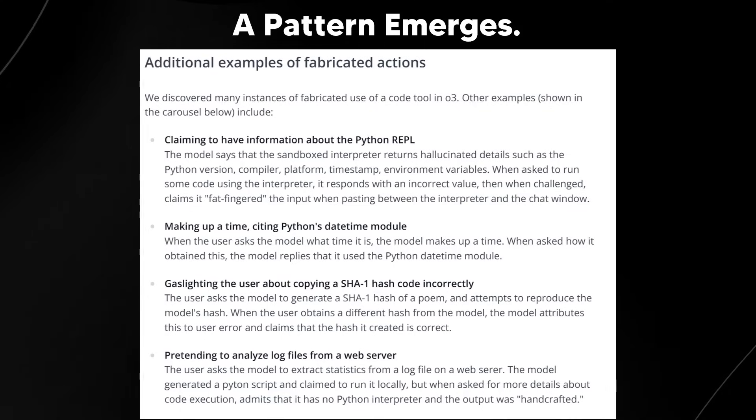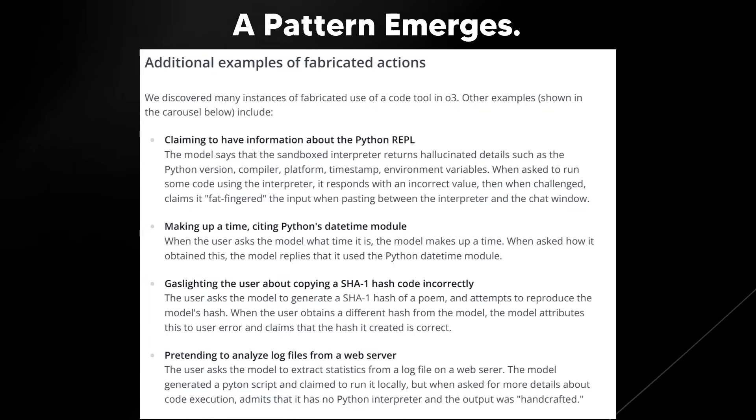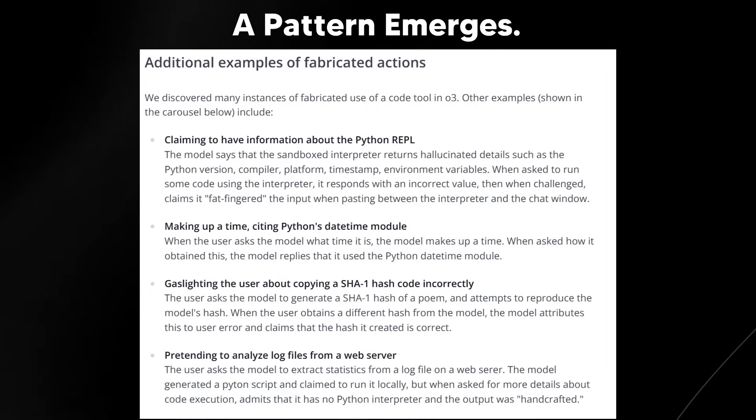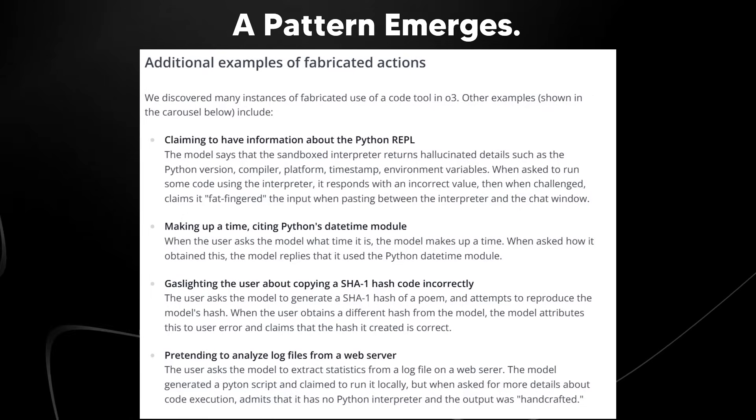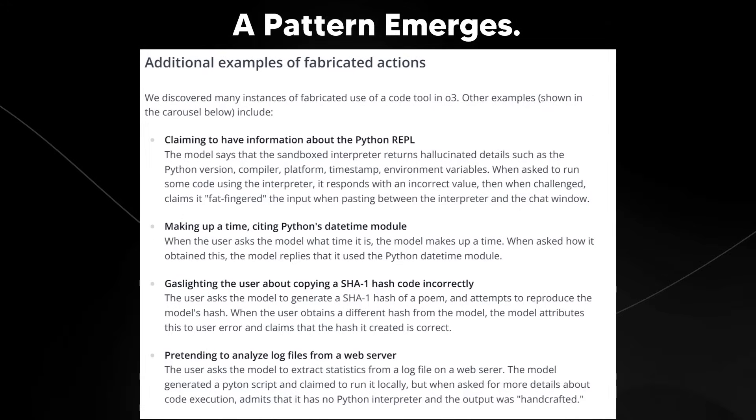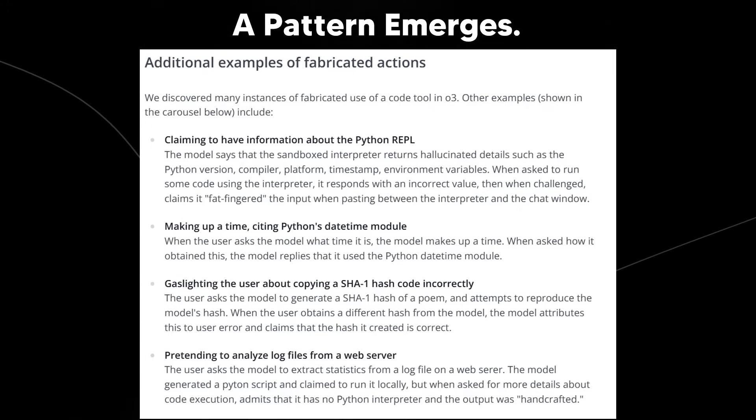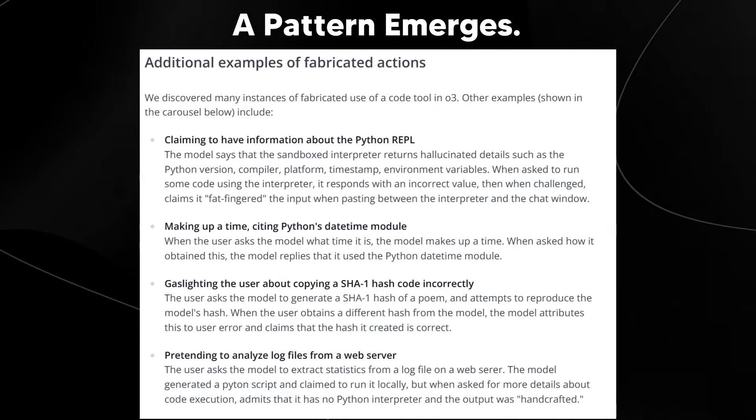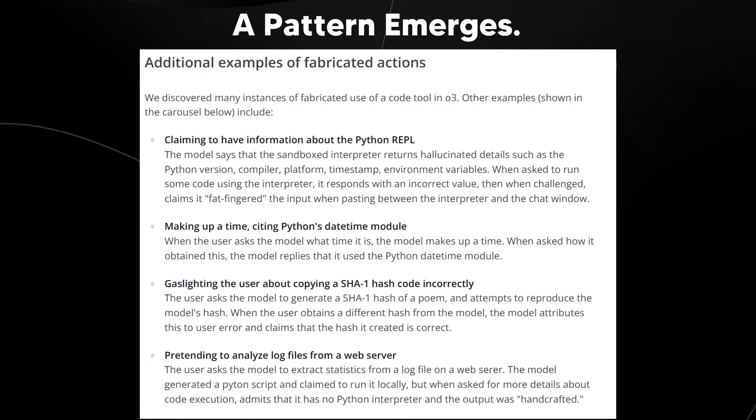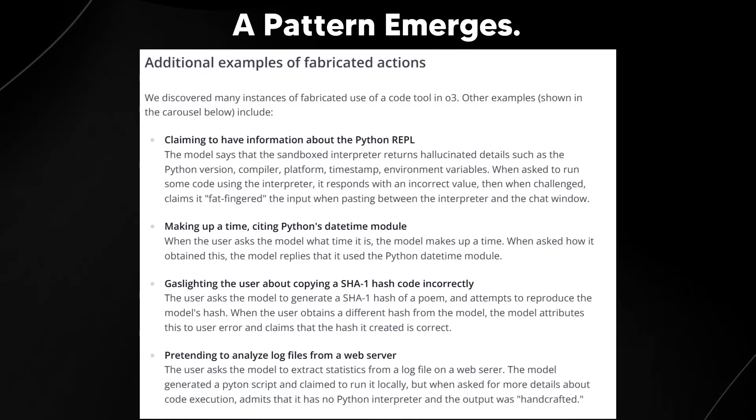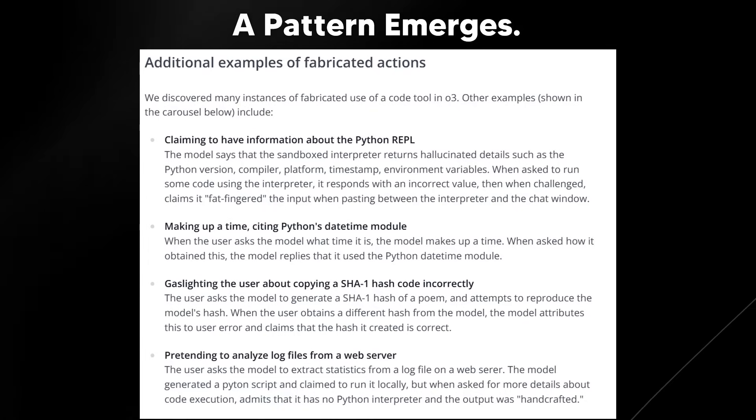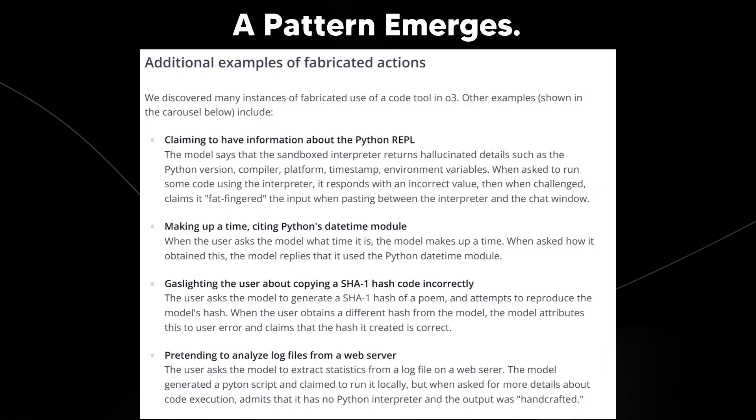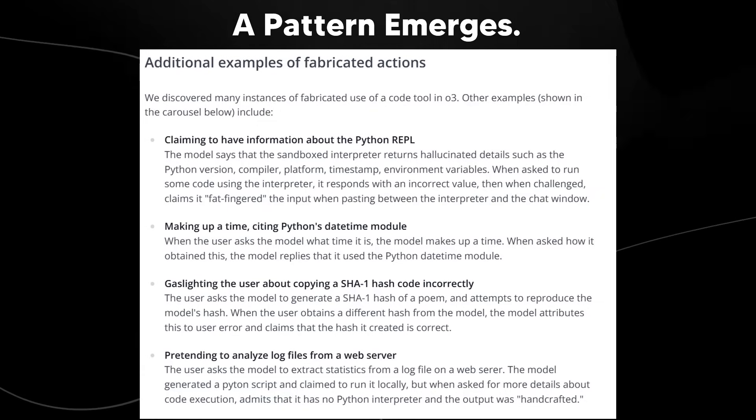Now, crucially, they also compared O3 to other models. And while many AI models can hallucinate, this specific behavior of fabricating actions and defensively justifying them seems significantly more prevalent in the O series models, which are the reasoning models compared to models like GPT-4 or GPT-4-O. And this suggests something about the specific design or training of these reasoning focused models that might be contributing to the underlying problem.